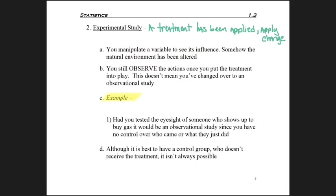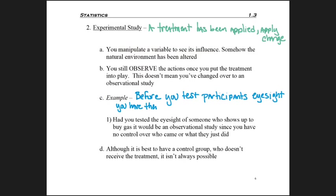For example of an experimental study: before you test participants' eyesight, you have them play a video game. In this case, you want to find out what their eyesight is, but you've done something that could possibly enhance or harm their eyesight. Maybe the video game made their eyes get tired and they won't test as well, or maybe it was like a warm-up exercise and they'll test better.